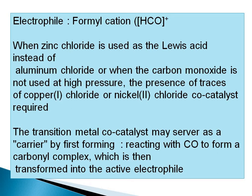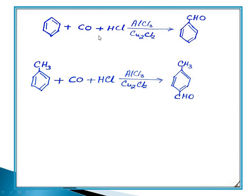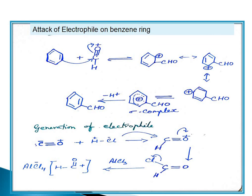Aluminium chloride is believed to increase the concentration of carbon monoxide in the reaction. The Gattermann-Koch reaction introduces a formyl group (HCO), forming an aldehyde. This reaction is limited — it is applicable only to benzene and alkyl benzenes, not to other aromatic substrates. The formylation reaction is selective in its substrate scope.